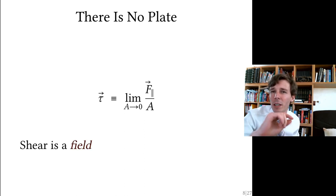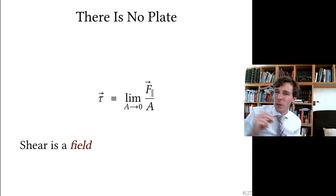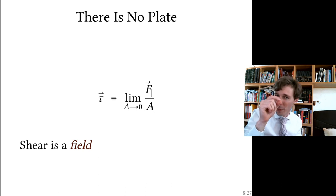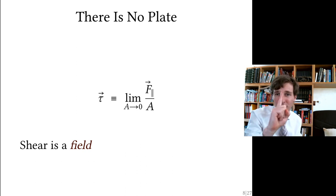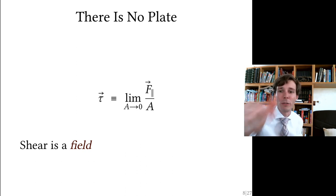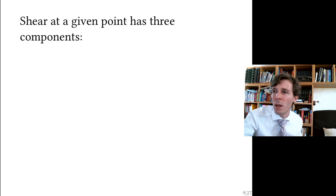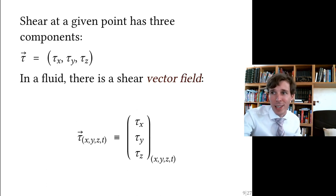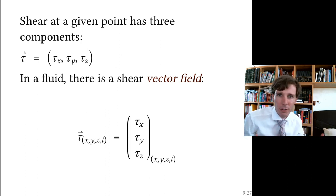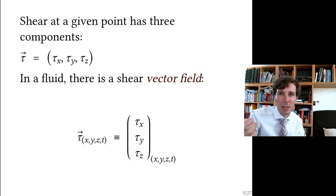We specify shear with a vector, so it now has three dimensions. Shear is a field: at every position XYZ inside the fluid, you need to specify shear — its direction and magnitude. Shear at a given point has three components: τx, τy, τz. So in the fluid there is a shear vector field — one vector with three components at every point in space and time.